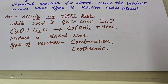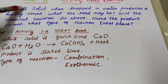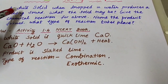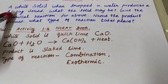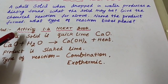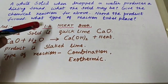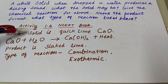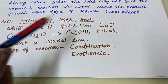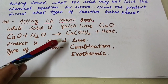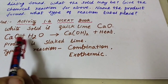In this question only one sentence is given, followed by four questions. The key indications are: the solid is white in color, and it produces a hissing sound when dropped in water. Based on NCERT book Activity 1.4, the white solid is quicklime (CaO). When CaO is dropped in water, it produces slaked lime plus heat, and a hissing sound is produced.